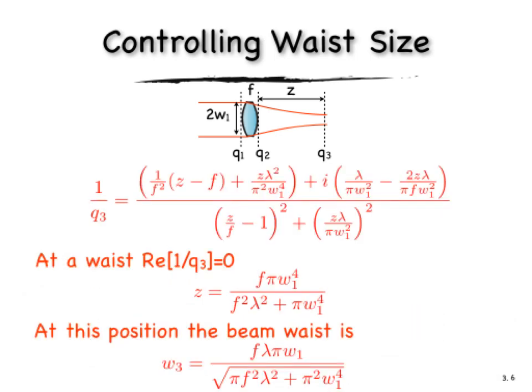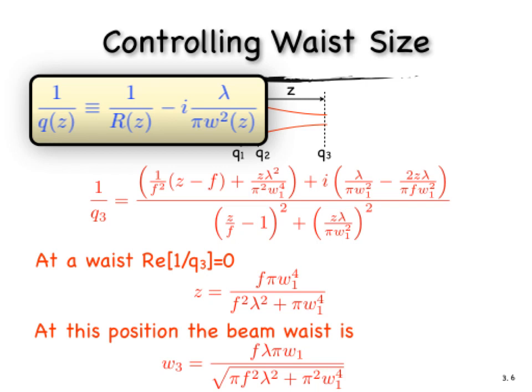Now, we want Q3, we want position 3 to be a waist, and that means the Q parameter should be purely imaginary. Because remember, the real part is related to the radius of curvature, the radius of curvature is infinite, and that gives us a purely imaginary Q parameter.